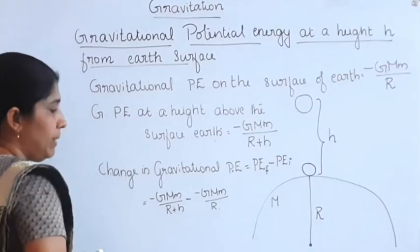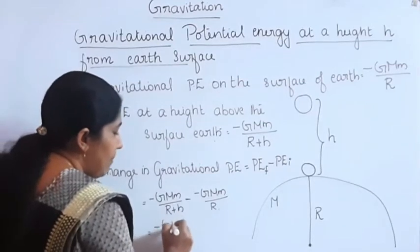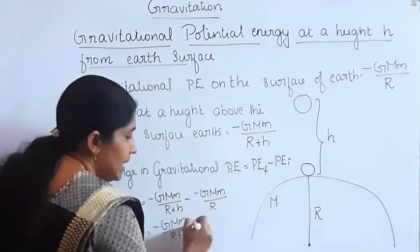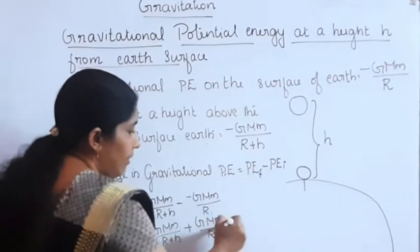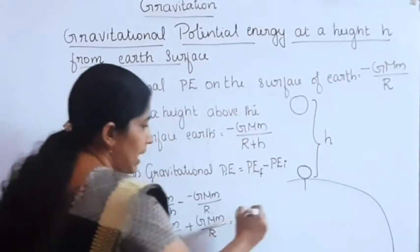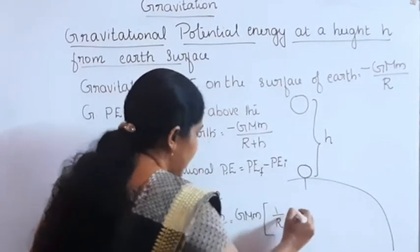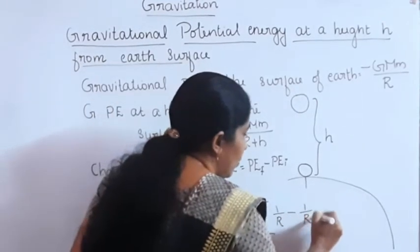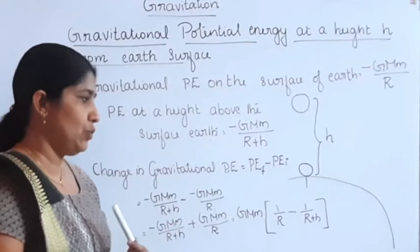From this equation, we can write: minus GMm divided by R plus h, minus of minus, plus GMm divided by R. Taking GMm outside, we get GMm into 1 by R minus 1 by R plus h.